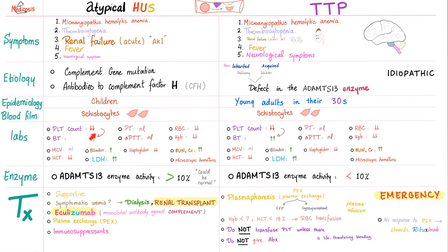Lab results are very similar. Platelet count is low. Bleeding time is elevated because it's a primary hemostasis defect. PT and PTT are normal because secondary hemostasis is intact. RBCs, hemoglobin, and hematocrit are all low due to hemolytic normocytic anemia. MCV is normal. LDH and bilirubin are elevated. BUN and creatinine can be elevated in either condition due to acute renal failure, but are far more commonly elevated in atypical HUS. Microscopic hematuria is also more common with atypical HUS.